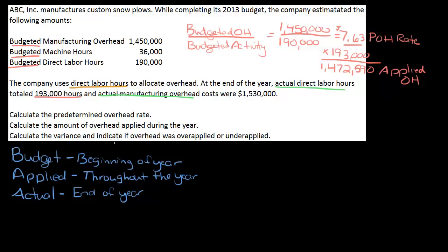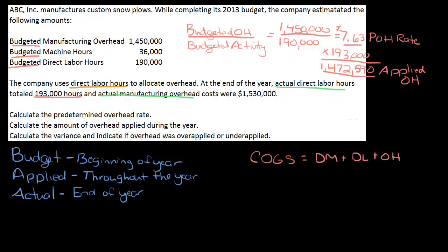Now I need to calculate the variance. Remember, the applied overhead is based on estimated figures — while we're using actual hours, the predetermined overhead rate is based on budgeted numbers. We need to make sure actual spending is reflected in Cost of Goods Sold. Cost of Goods Sold is direct materials plus direct labor plus overhead. Right now, $1,472,590 is what's sitting in Cost of Goods Sold, but we actually spent $1,530,000.